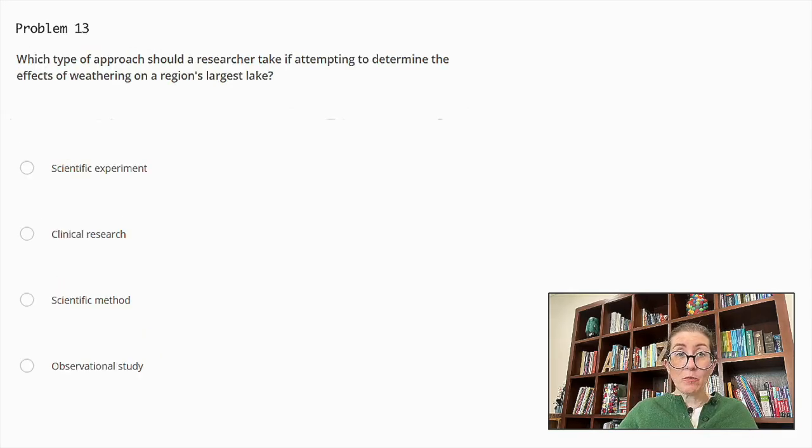Which type of approach should a researcher take if attempting to determine the effects of weathering on a region's largest lake? Scientific experiment, clinical research, scientific method or observational study? The correct answer is observational study. This approach involves monitoring and recording conditions without manipulating the environment. For studying the effects of weathering on a region's largest lake, an observational study allows the researcher to gather data on natural processes and changes over time, providing insights into how weathering affects the lake.